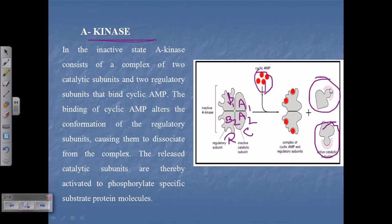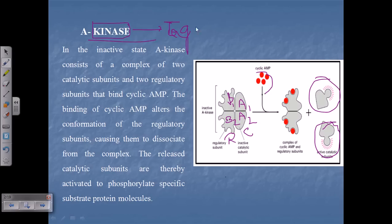After the activation of the protein kinase A catalytic domains, they will perform further tasks. As the name suggests, kinase is a protein that loves to tag phosphate groups onto other protein moieties. So if there is another protein X, they will tag the phosphate group on X to make it activated sometimes, or sometimes make it deactivated.